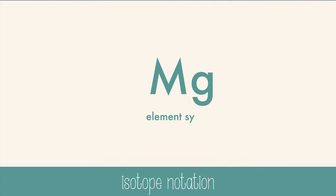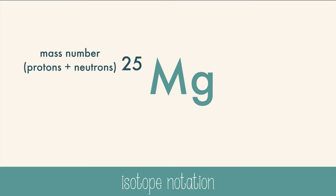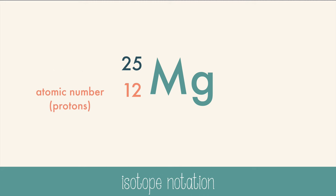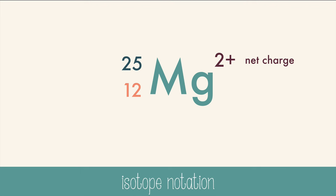Now in chemistry, especially nuclear chemistry, we need to be able to quickly see nucleus numbers on an isotope of an atom. Isotope notation does that job. We write the element symbol from the periodic table, the mass number — which is the number of protons plus neutrons in that isotope — the atomic number, which is the number of protons, and sometimes the net charge of the atom if it isn't neutral. This is a magnesium cation, and it's also one of the less abundant isotopes of magnesium — it has 13 neutrons instead of 12. You can easily figure out the number of neutrons by subtracting the atomic number from the mass number.